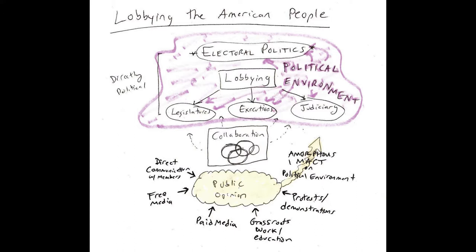Public opinion is the target of lobbying the American people. And when I say the American people, it might not be the American people. It might be the people of the state of Oregon, the state of New York, or the people of Detroit or Atlanta or of the southeast. So it can be some subset of the overall American people, but the public opinion is the target.